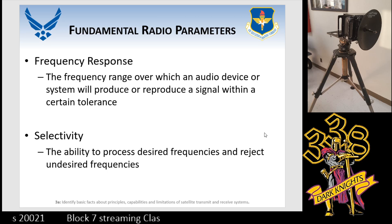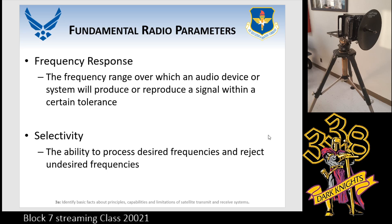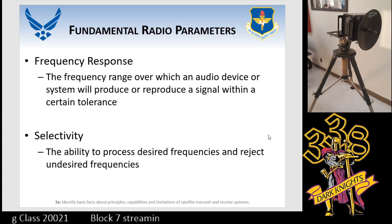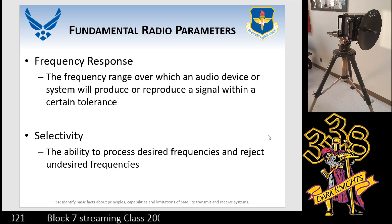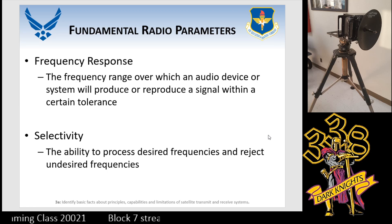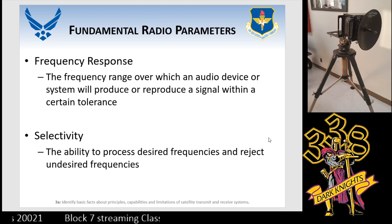We have something called selectivity — the ability to process desired frequencies and reject undesired ones. Selectivity comes in two parts: pre-selection and overall selectivity, and it happens on the receive side. You can identify where pre-selection happens on the Tisser and where overall selectivity happens. Pre-selection gets rid of most frequencies first, and by the time it gets to that last filter, that's where overall selectivity weeds out all the undesirables.